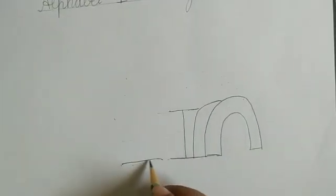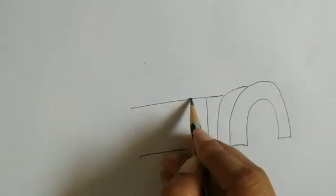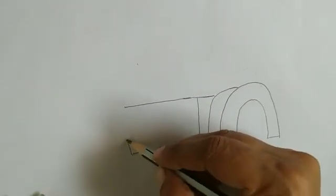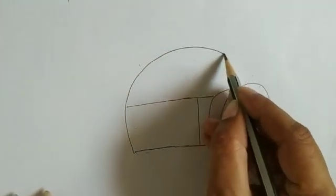And join the letter. Now we will draw the sleeping line. We will draw a big sleeping line here. We will also draw a sleeping line and make a big curve.